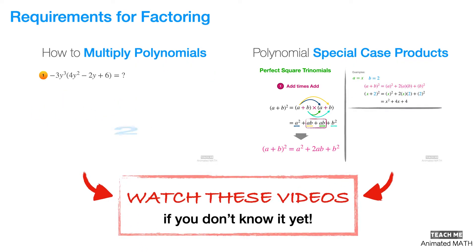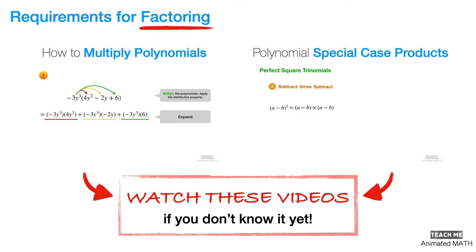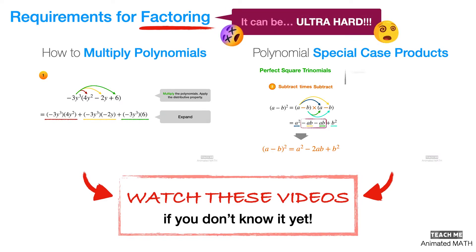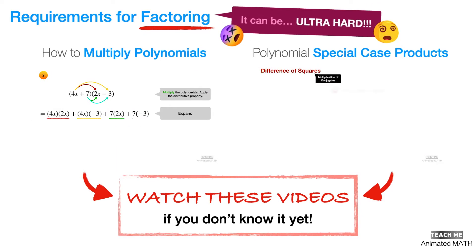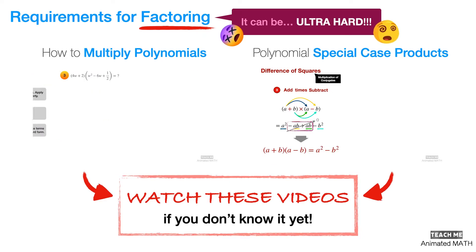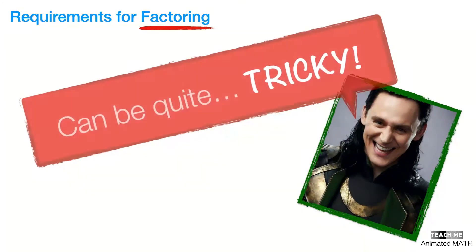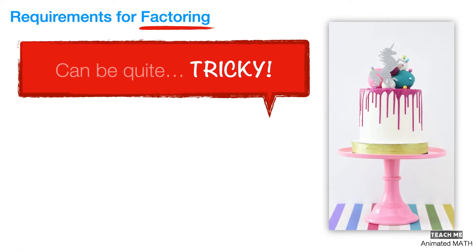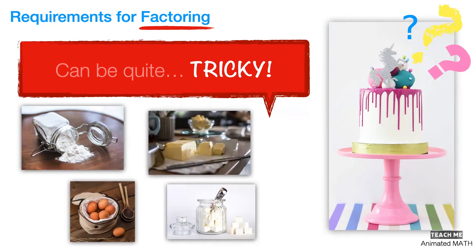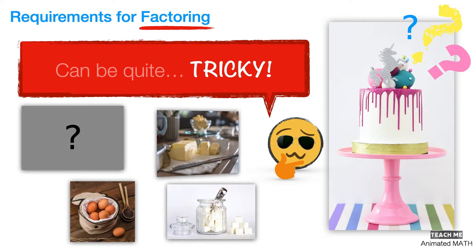And that is because factoring can be ultra hard. The last two examples were pretty simple, but I can tell you from extensive algebra experience that factoring can become really tricky quite fast. It is like figuring out the ingredients that went into a delicious cake. If you've got a lot of baking experience, then it is quite simple.